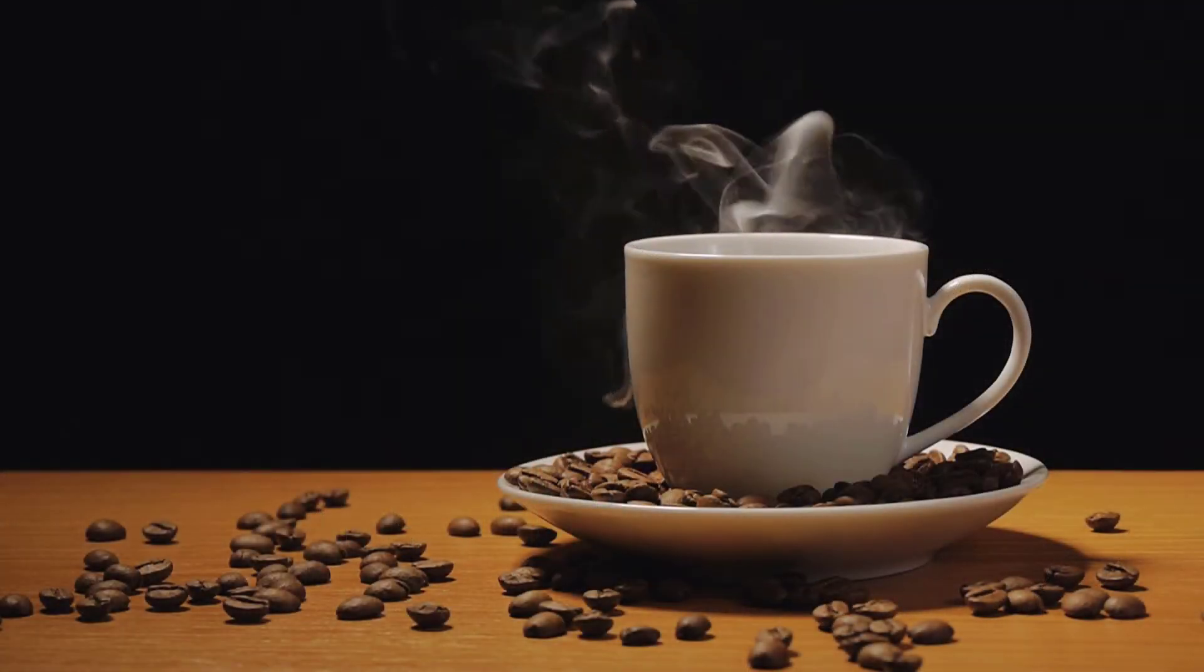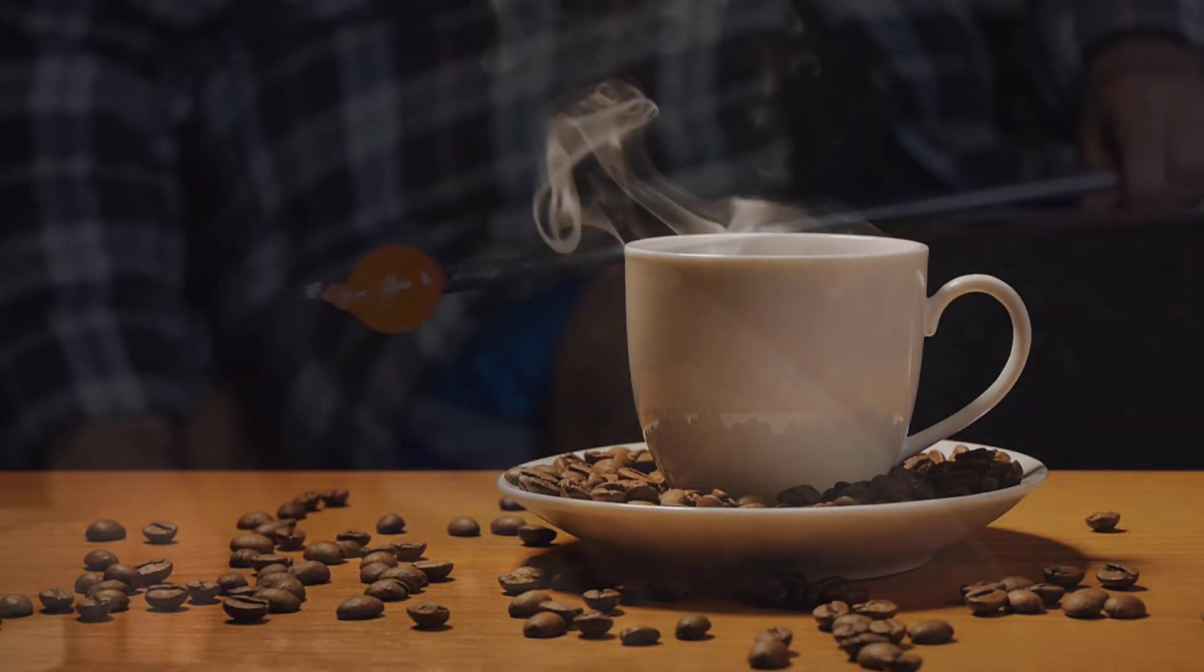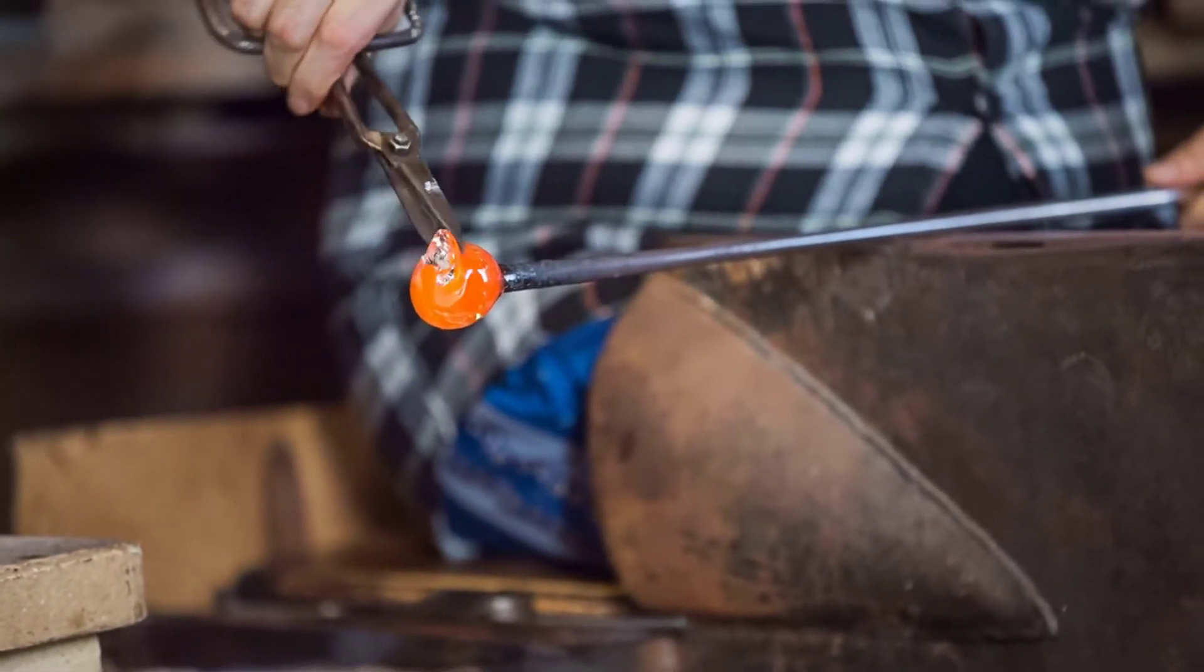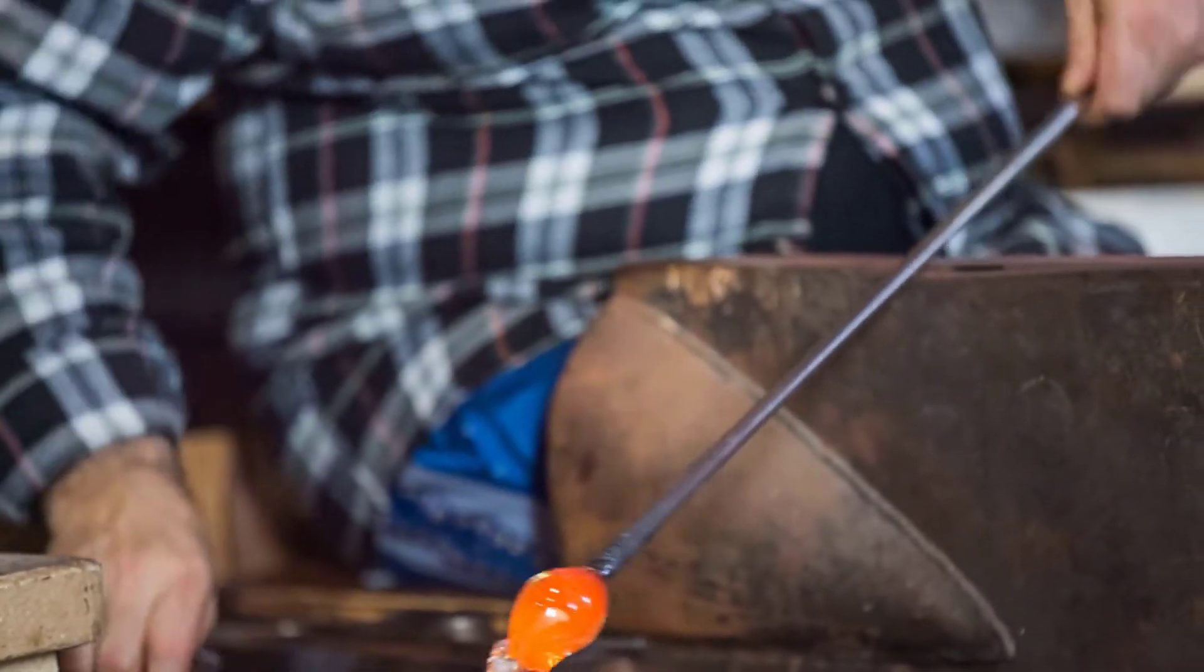For example, think of how much time does it take for the hot coffee mug to cool down, or how much time do you have to shape this molten glass? Transient thermal analysis determines temperatures and other temperature quantities that vary over time.